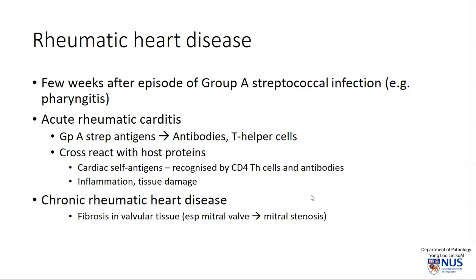Let's take a quick look at the pathophysiology of rheumatic heart disease. This usually is an immune reaction — it is not a direct infection of the cardiac tissues. This occurs a few weeks after an episode of group A streptococcal infection, often in the form of pharyngitis. The group A streptococcal antigens incite an immune response in terms of antibodies and T helper cells from the host, which then cross-react with host proteins found in the heart. Cardiac cell antigens are recognized by our own CD4 T helper cells and antibodies, resulting in inflammation and tissue damage.